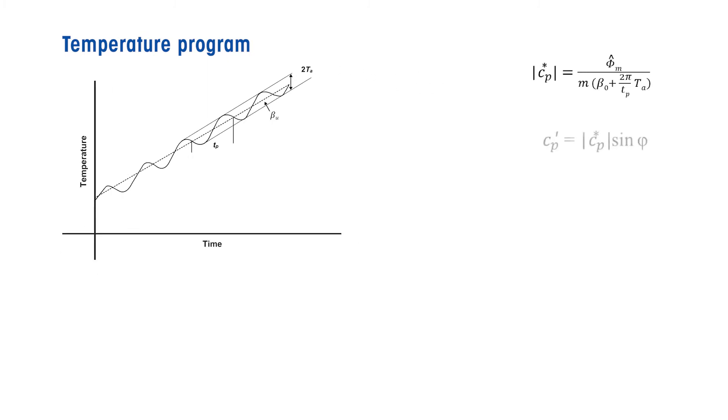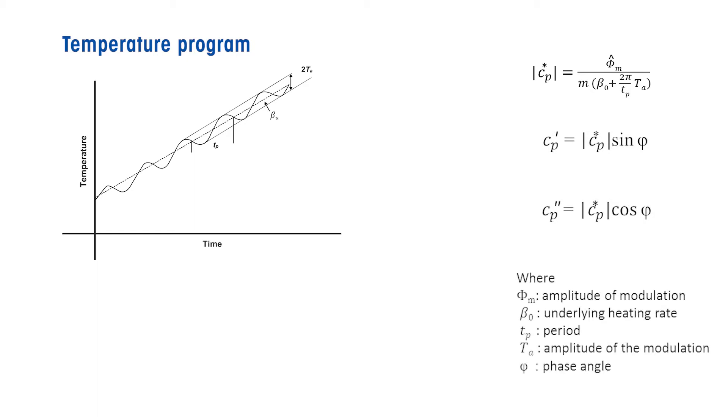Continuous averaging of the heat flow over one cycle yields the total heat flow generated by the underlying heating rate. The total heat flow corresponds to the measured curve in a conventional DSC experiment. The reversing heat flow is determined from the amplitude of the modulated heat flow and the modulated heating rate. The difference between the total heat flow and the reversing heat flow gives the non-reversing heat flow.